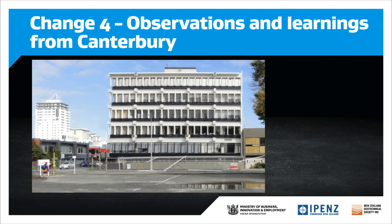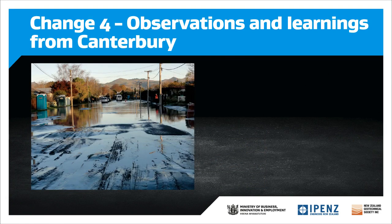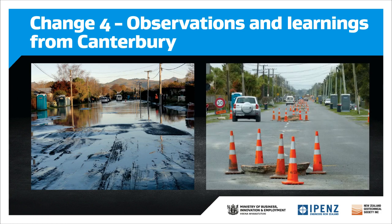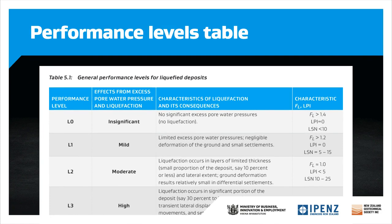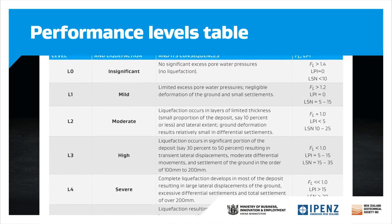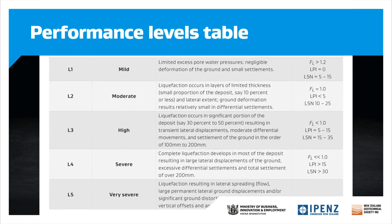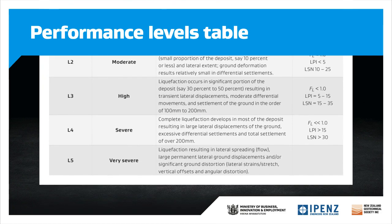The section on the evaluation of liquefaction-induced settlement, lateral spreading, and cyclic horizontal ground displacement is substantially updated to reflect the learnings from Canterbury and the recent research, including the effects on structures. This subject will be covered in more detail in Module 4. The Performance Levels Table has been updated to include LPI and LSN screening criteria, as well as the Factor of Safety. This table also includes five explanatory notes, which are critically important to consider when reviewing this table.